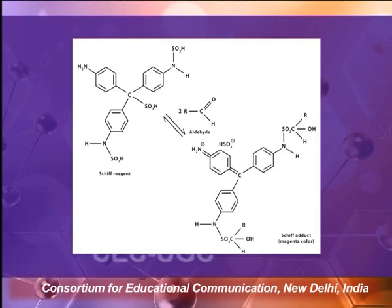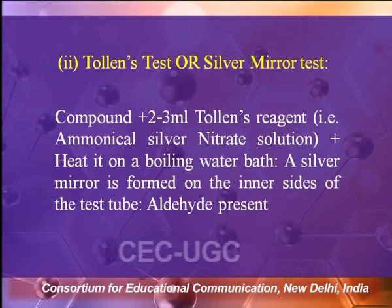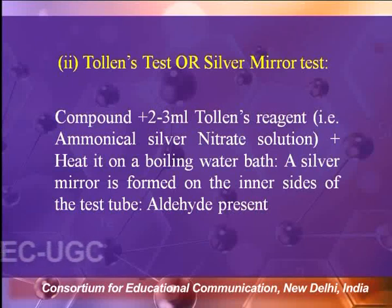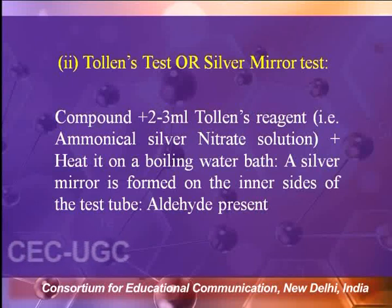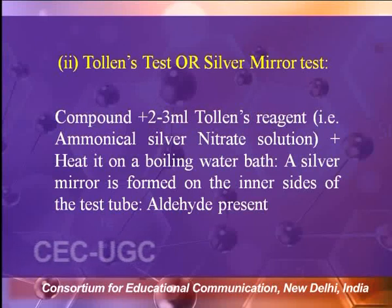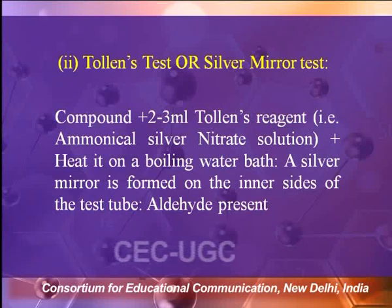Another test to distinguish whether the carbonyl functional group is an aldehyde or ketone is the Tollens test, also called the silver mirror test. Take the given organic compound in a test tube — a small amount or a few drops if liquid. Add freshly prepared Tollens reagent. Tollens reagent is ammoniacal silver nitrate solution.